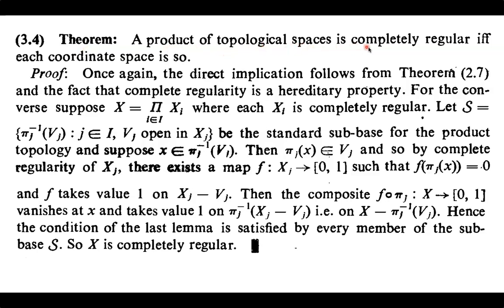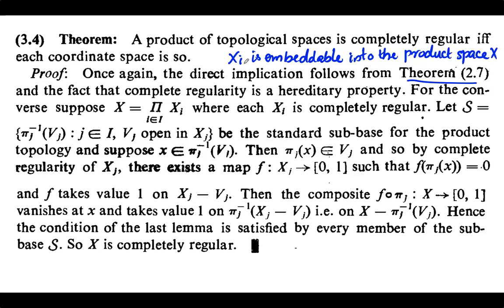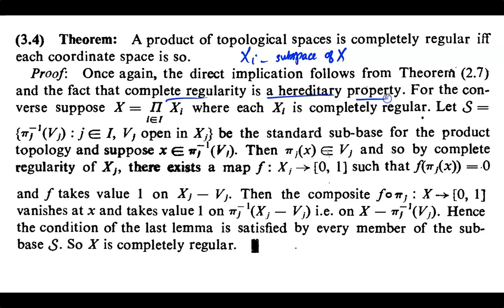Theorem: A product of topological spaces is completely regular if and only if each coordinate space is so. The direct implication follows from a previous theorem and the fact that complete regularity is a hereditary property. From this theorem we know that every coordinate space Xi is embeddable into the product space, so we can regard each coordinate space as a subspace of the product space X. Since complete regularity is hereditary, if X is completely regular then each Xi will be completely regular.